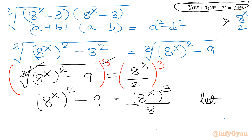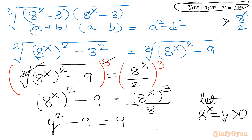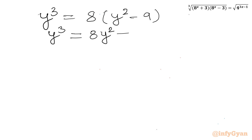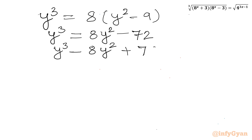Now let us consider 8^x = y. The condition on y for real solutions is y > 0. Writing our equation in y: y² − 9 = y³ / 8. Cross-multiplying gives y³ = 8(y² − 9), which expands to y³ = 8y² − 72. Taking all terms to the LHS: y³ − 8y² + 72 = 0.